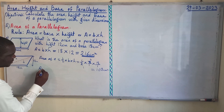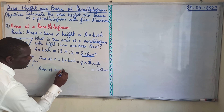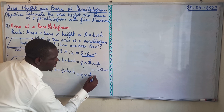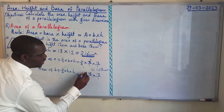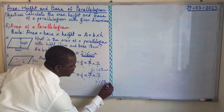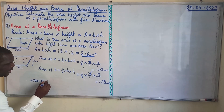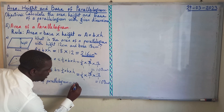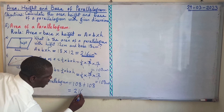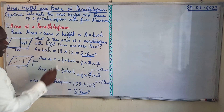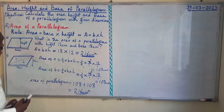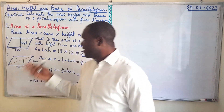Area of triangle B = ½ × base × height = ½ × 18 cm × 12 cm. 2 into 18 goes 9, and 9 × 12 = 108 centimeters squared. Therefore, area of parallelogram = 108 + 108 = 216 centimeters squared. The answers from both methods are the same, so it is left for you to choose which one you can best apply to solve for the area of this parallelogram.